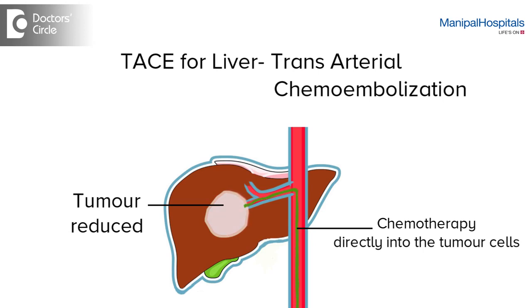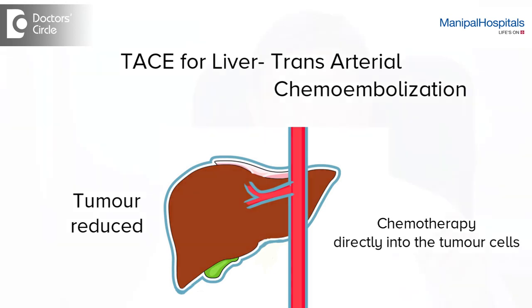The chemotherapy directly acts on the cancer, and following the chemo injection, small beads or gels are inserted to block the artery so that the medicine stays in the liver tumour bed.